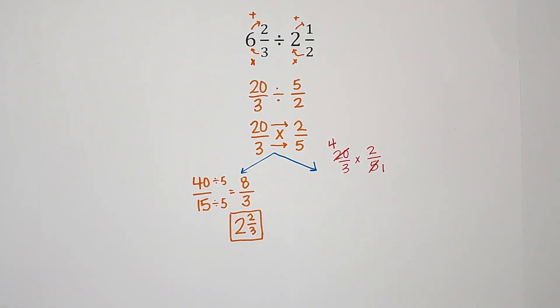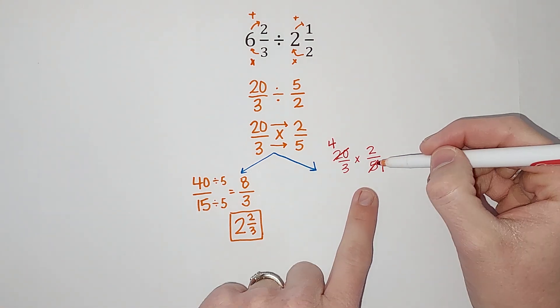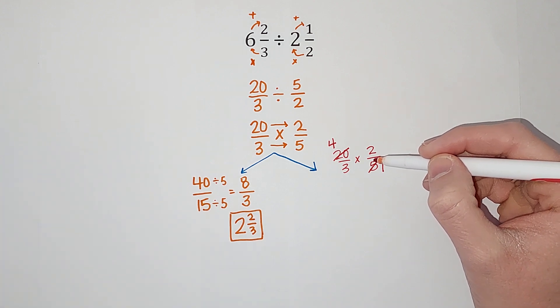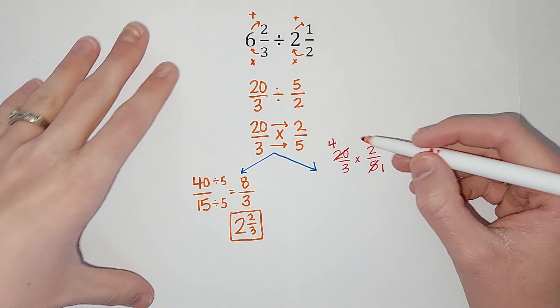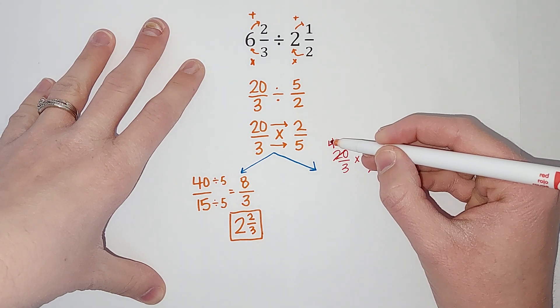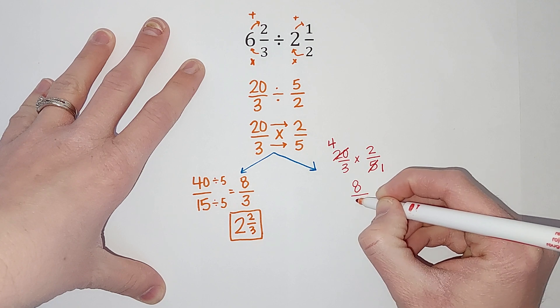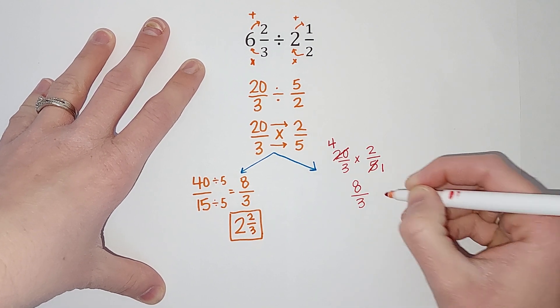You'll notice I took a 5 out just like I did here. I just did it before I multiplied. So then we multiply straight across. So 4 times 2 gives me 8, 3 times 1 gives me 3. And again it would simplify down or go to a mixed number the same, 2 and 2 thirds.